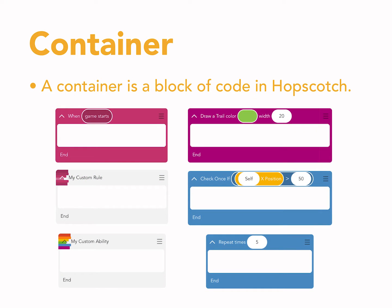A container is a block of code in Hopscotch — for example, a When container, a custom rule or custom ability, a repeat block, a check-once-if block, or a draw-a-trail block. Currently, the scope of the local variable can be set to a specific container by dragging where the local variable is declared.